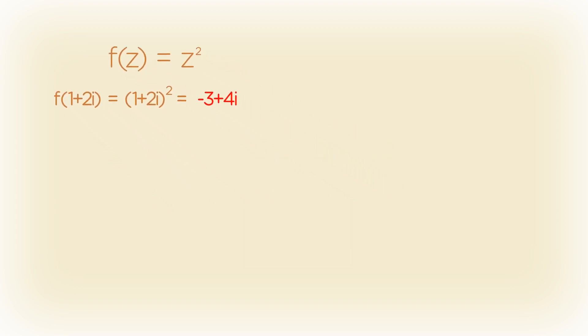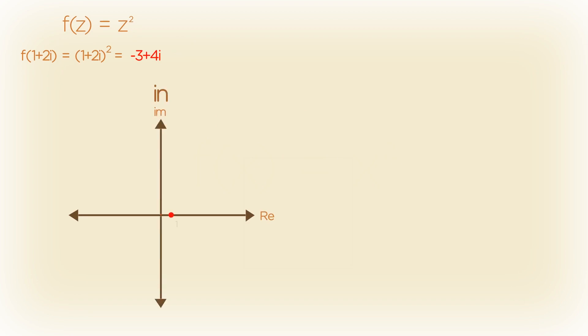This doubles the dimensions of our problem because now just the input needs two dimensions a real and imaginary axis so we can represent something like 1 plus 2i. But we also need two dimensions for the output which will also be complex or negative 3 plus 4i in this case.